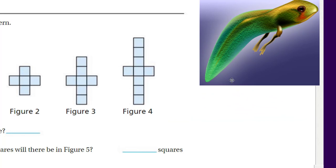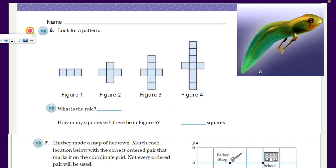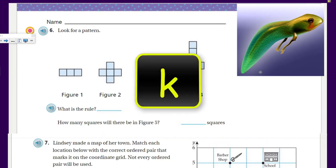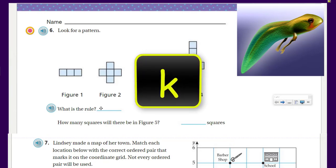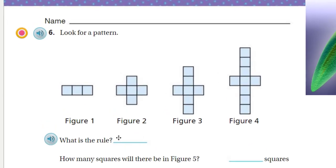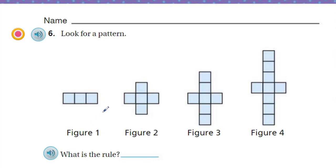We have a video we have to do. Anyway, welcome to review two. We're talking chapter nine. Let's start with question number six — look for a pattern. And what do we have going on here? Well, I see a pattern: figure one, figure two, figure three, and figure four.